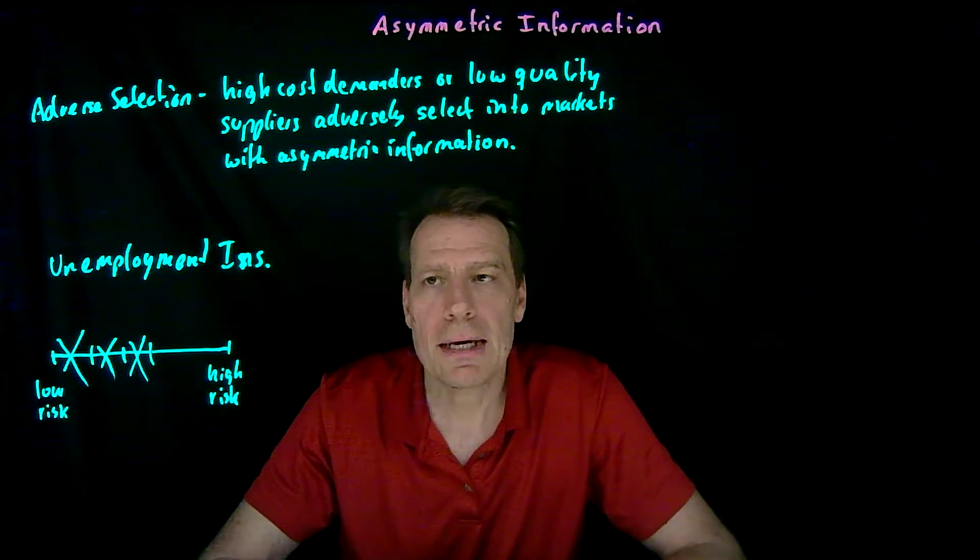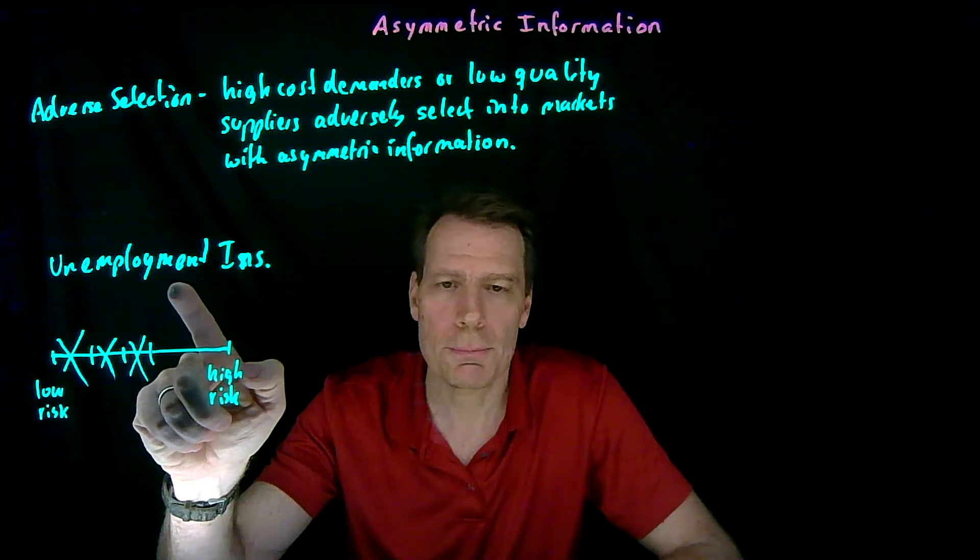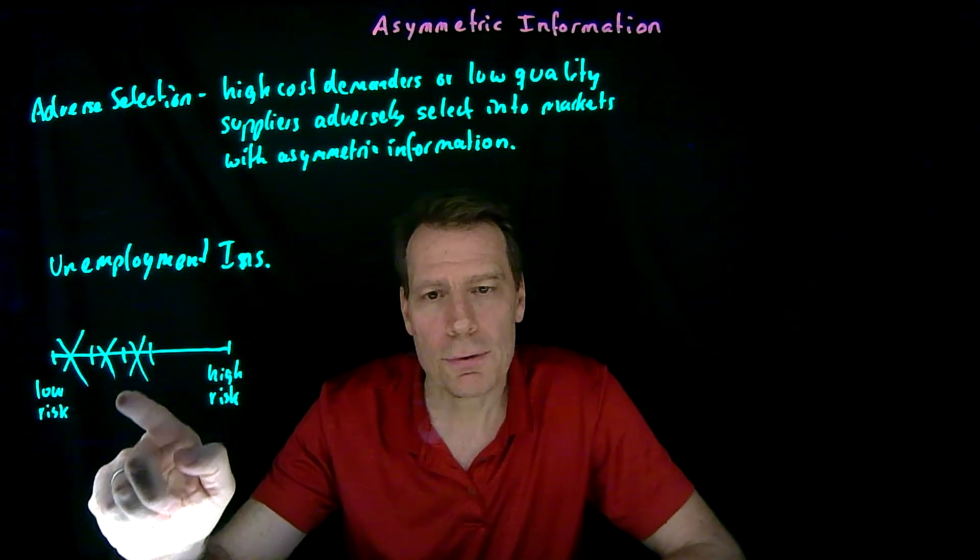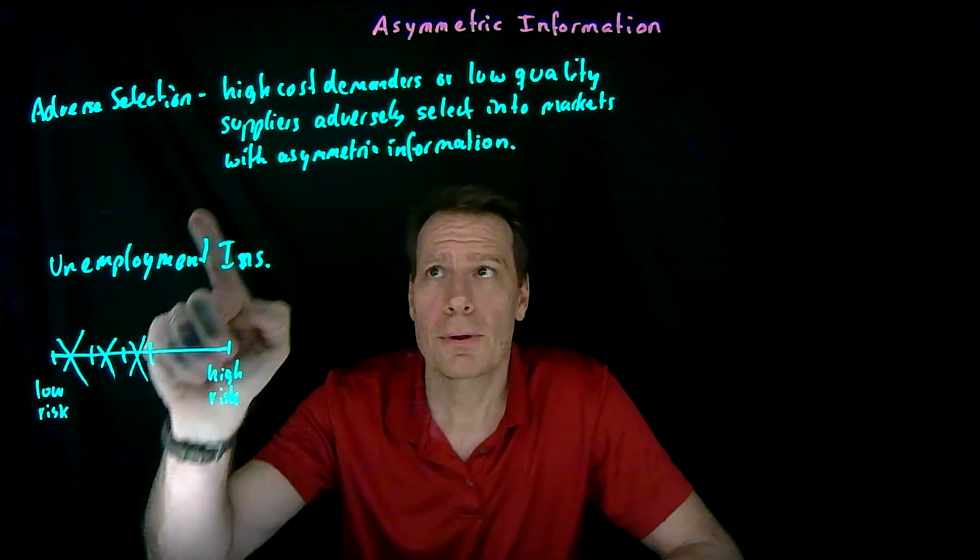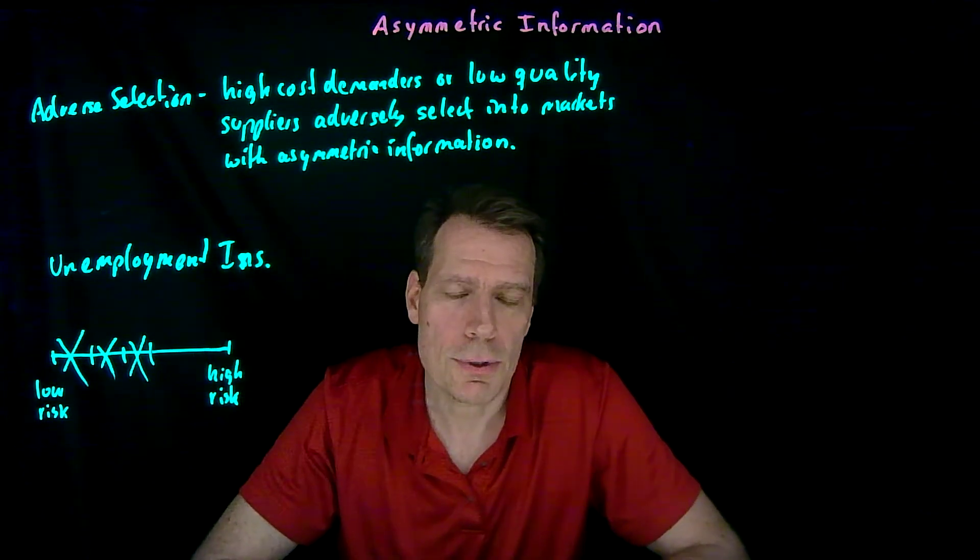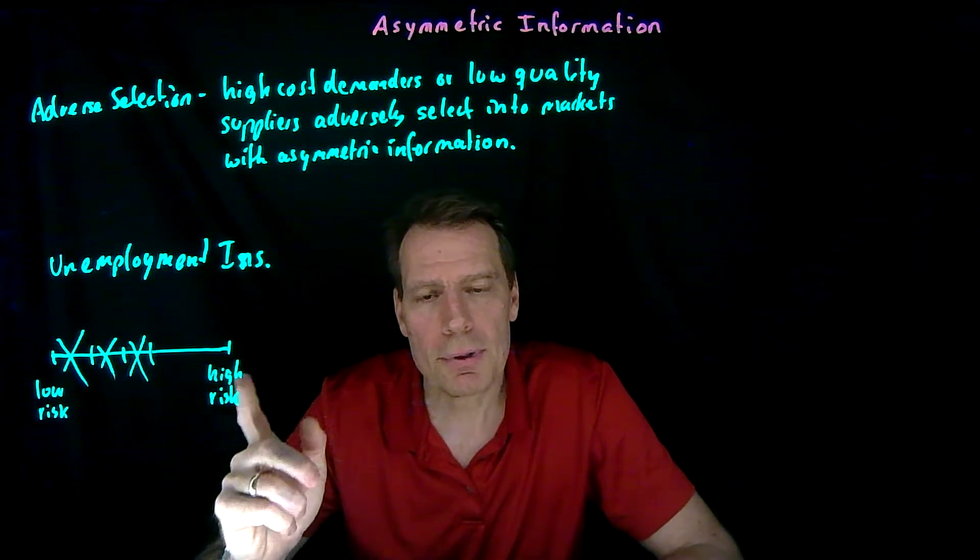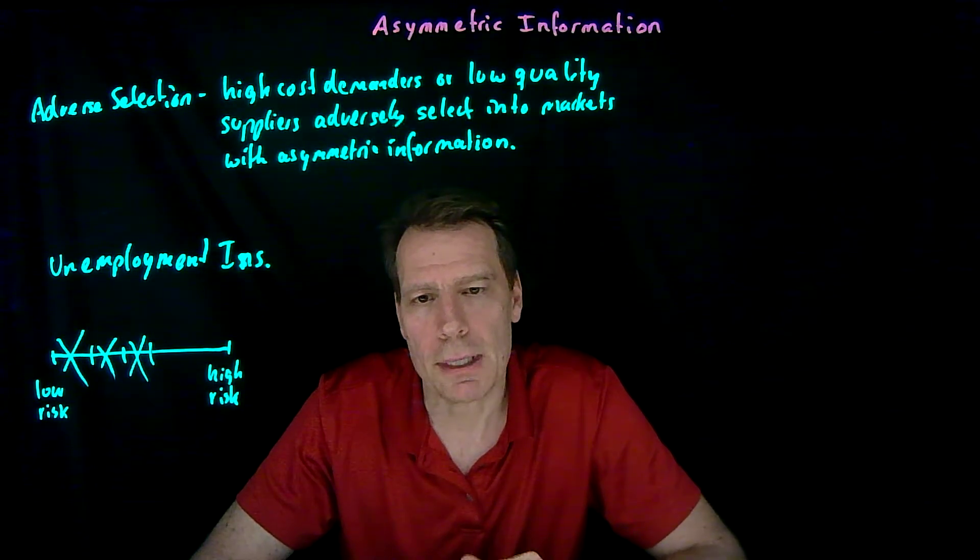We see an adverse selection of these high-cost demanders into the pool of applicants for unemployment insurance and an adverse selection out of the insurance market of low-risk demanders who impose low costs on the insurance company. This can lead to an upward spiral in premiums that eventually leads to the disappearance of the entire market.